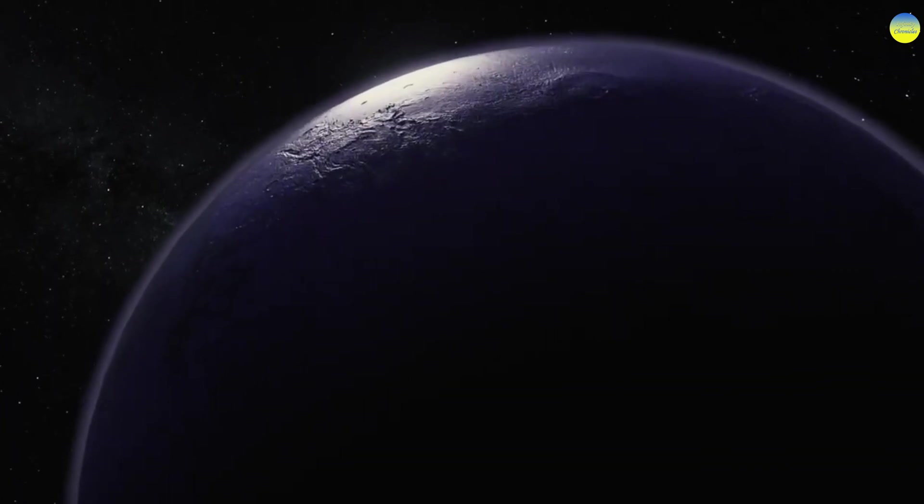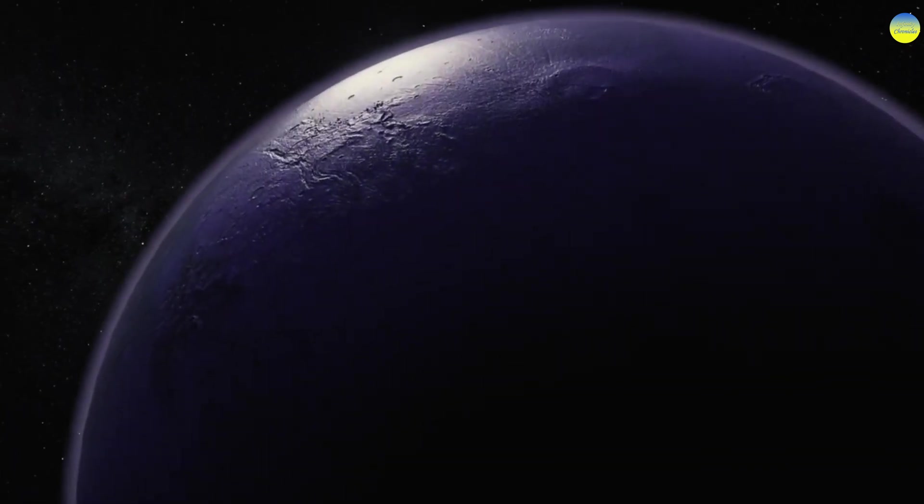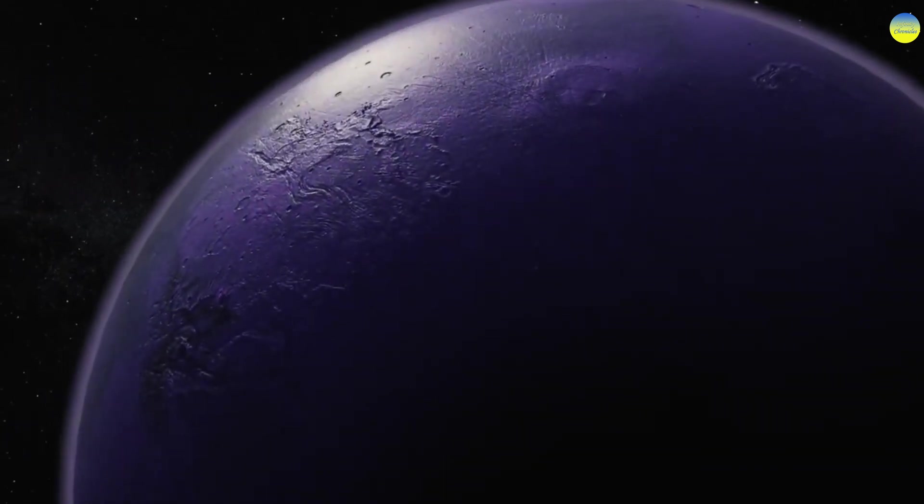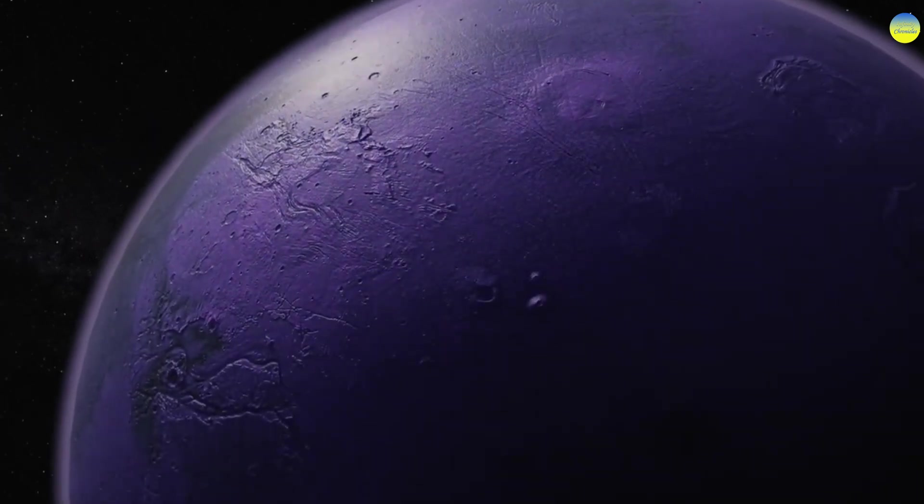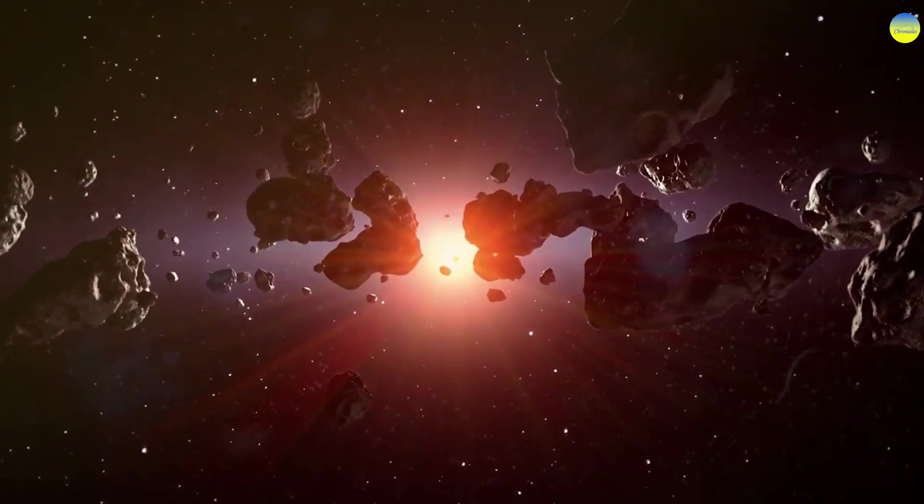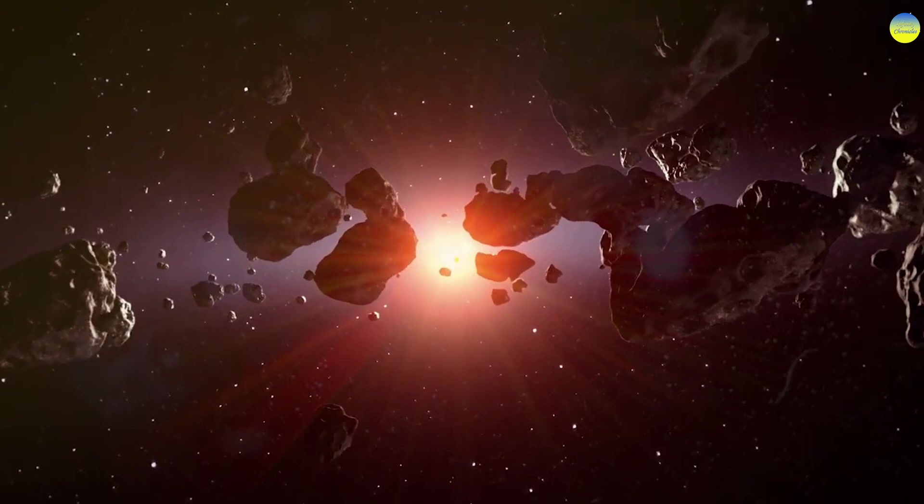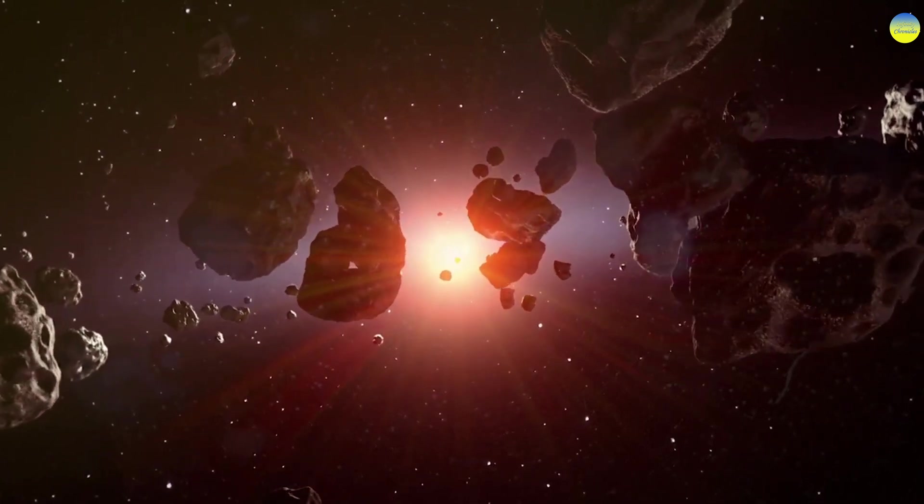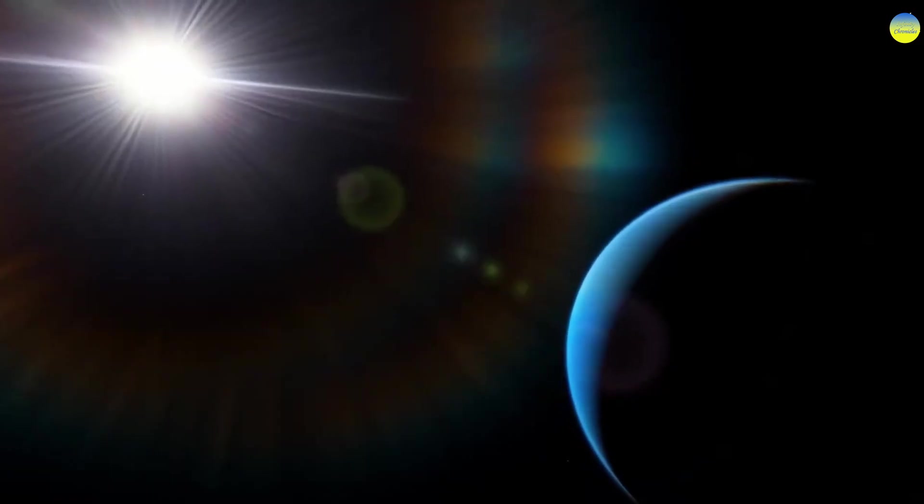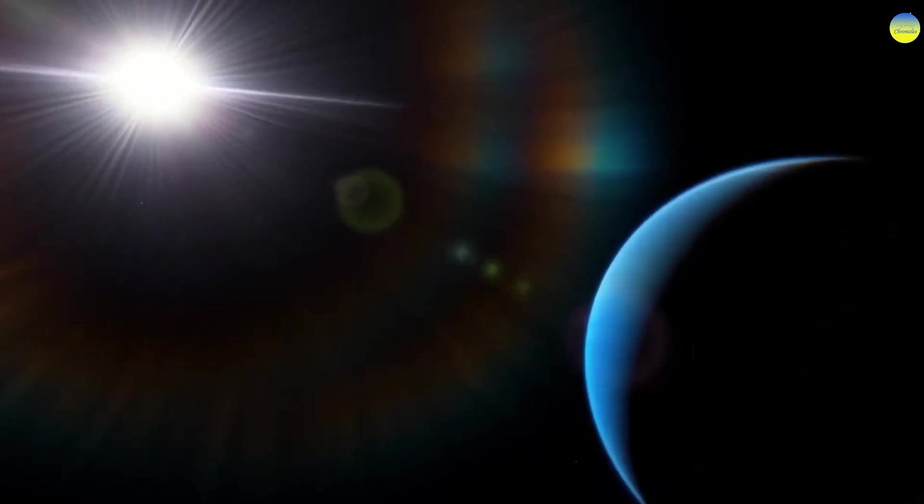At all times, scientists have repeatedly proposed hypotheses about the existence of not-yet-discovered planets in our solar system. So, in the past, it was assumed that the asteroid belt was the remains of the once-existing planet Phaeton. And now, many scientists admit another planet's existence beyond Neptune's orbit.